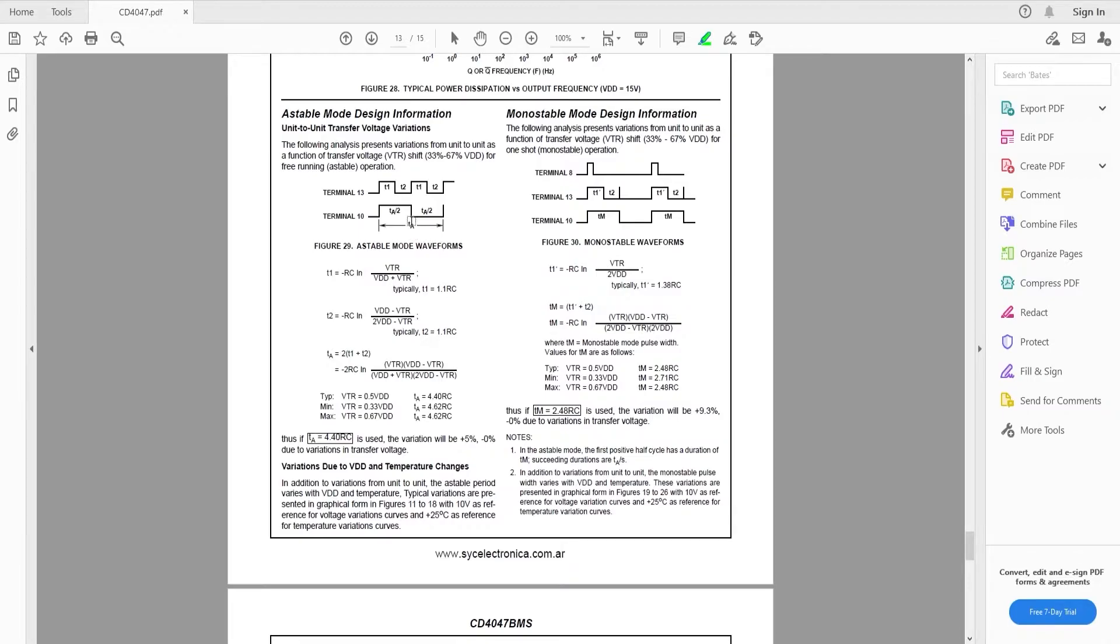Our output pulse is at 10, 11 and 13. Now here is the formula to calculate the frequency in the astable mode. Here is the pin 13 output and then pin 10 output. You can see the pin 13 output frequency is double than the pin 10 and pin 11 as well. Pin 11 is not shown here because it's just the inverse of pin 10.